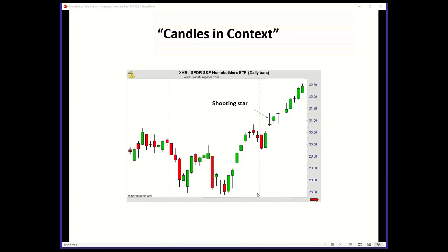Here we have a shooting star — long upper shadow, small real body at the bottom end of the trading range. Normally this is a potentially bearish signal. But why do I have 'candles in context' here? There's a shooting star, and if you sold here — keep in mind when we talk about bearish signals, it doesn't necessarily mean selling short; it could mean getting out of long positions or moving up protective stops. Why wouldn't we be bearish yet? Because right below is the rising window — that's your first support area.